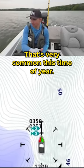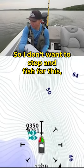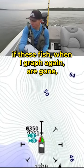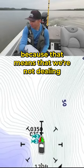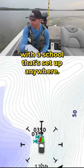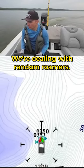That's very common this time of year. So I don't want to stop and fish for this if these fish, when I regraph again, are gone or in a different spot, because that means that we're not dealing with a school that's set up anywhere. We're dealing with random roamers.